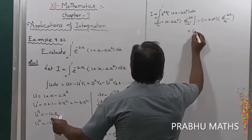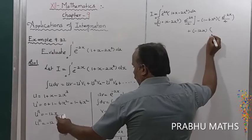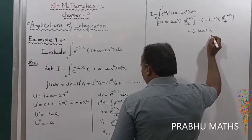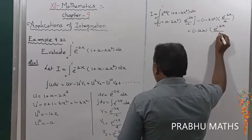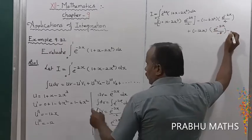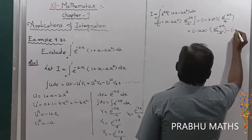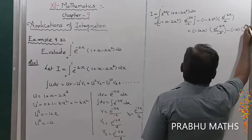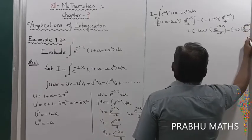The term with u'' = -12x is multiplied by v₂ = e^(-2x) / (-8). Then minus into u''' = -12 multiplied by v₃ = e^(-2x) / 16, all evaluated at limits 0 to 1.